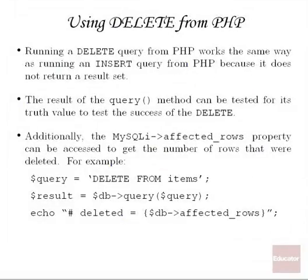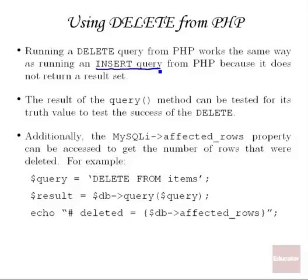Now we're going to talk about how to run DELETE commands from PHP. Running a DELETE query works in the same way that we ran an INSERT query, because when you run a DELETE query it doesn't return a result set. We saw there was a difference between INSERT and SELECT queries from PHP — with INSERT you could get the number of affected rows and the insert ID generated. With SELECT we'd get a result set object to loop over. But DELETE doesn't return any data.